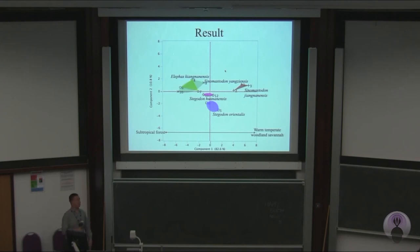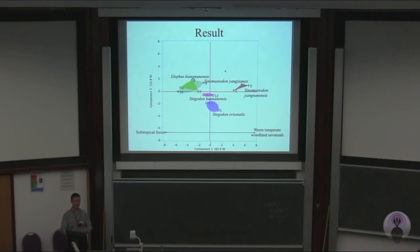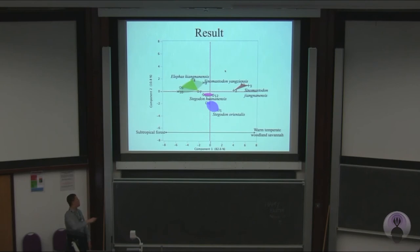Stegadon orientalis had the area to itself for a while, and then we had the dispersal of Elephas from perhaps the Siwaliks or other parts of the Middle East. Despite its Hypsolophodont morphology, which differs from the Brachio-Lophodont morphology of Stegadon, it probably just took over the niche that Sinomastodon had left. So Stegadon remains in the mixed feeder part of the morphospace, whereas Elephas calaenensis took over the obligate browser part.